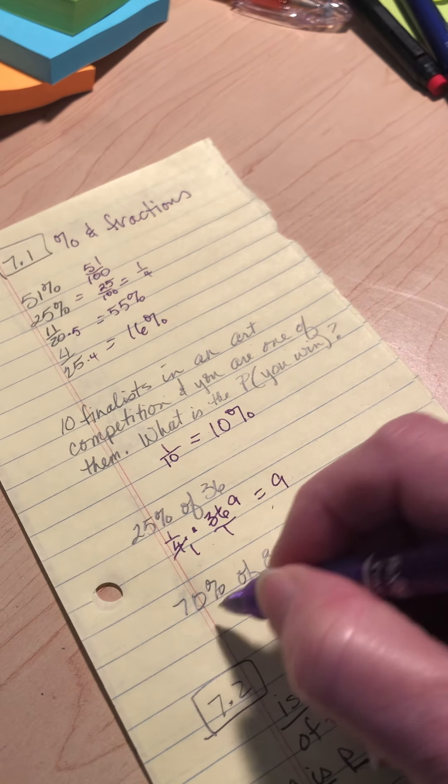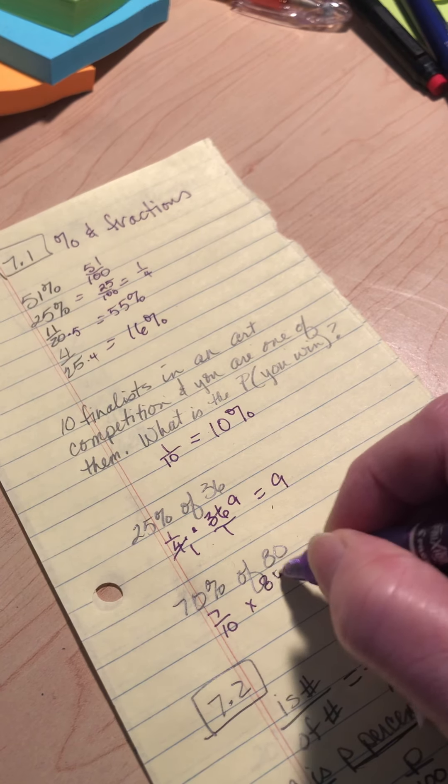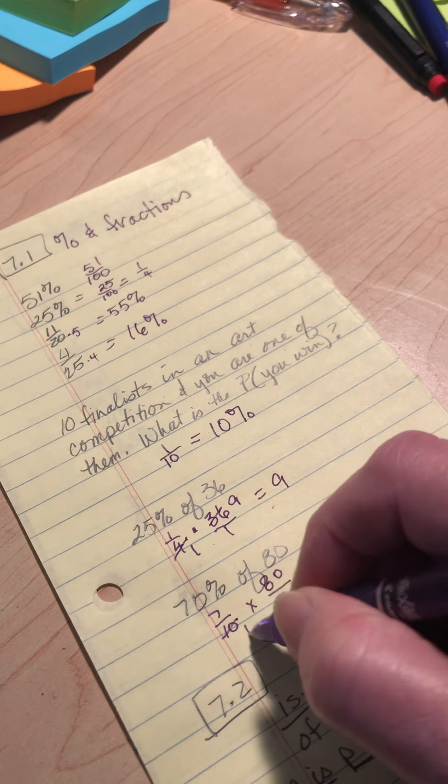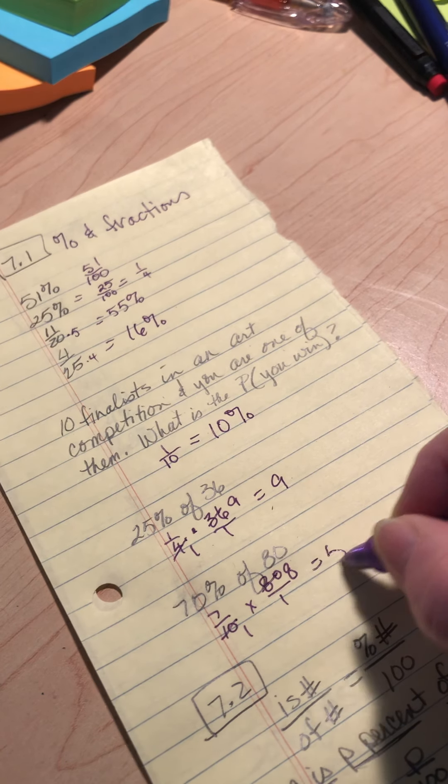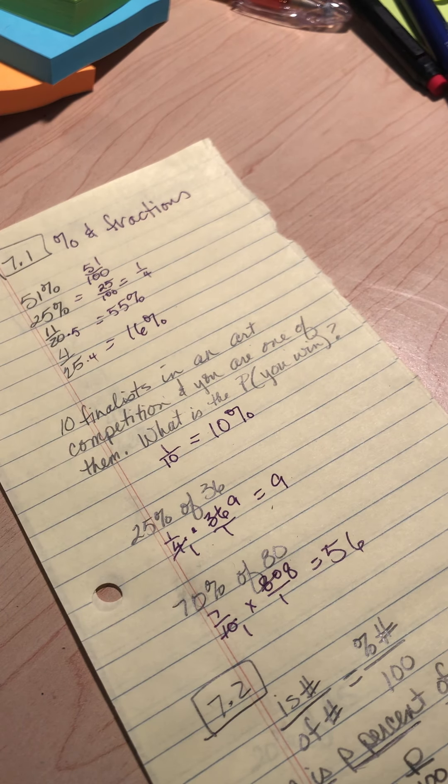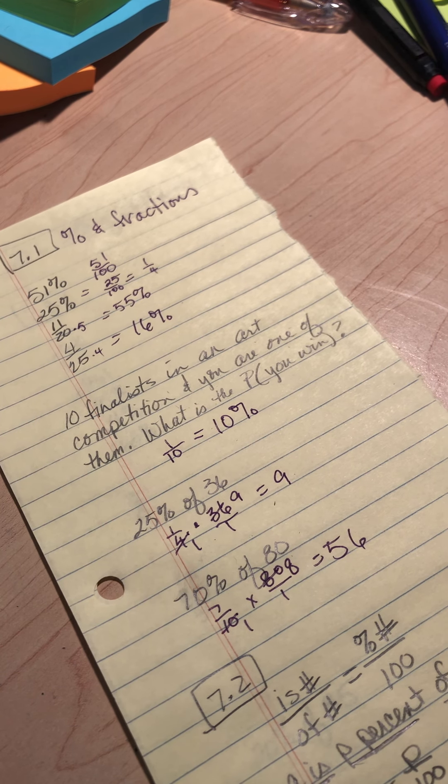70% is 7 tenths times 80 over 1. Well, I can simplify that to 7 times 8 equals 56. So that's kind of a good start.